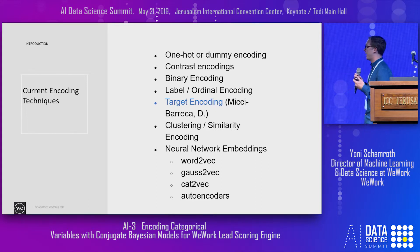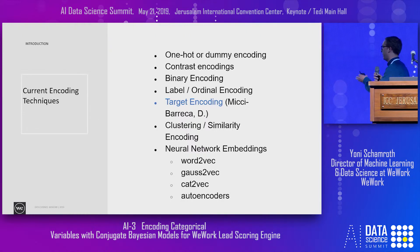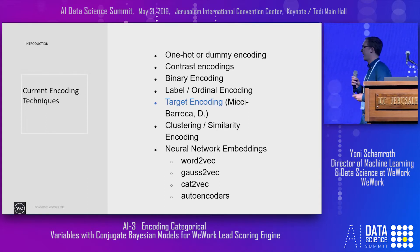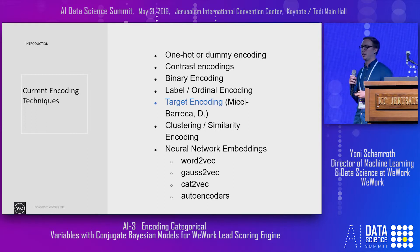With similarity encoding you can adequately apply dimensionality reduction techniques like principal component analysis. Neural network embeddings are also very popular — I'm personally a big fan of clever uses of word2vec, and I've seen product-to-vec, cat-to-vec, and all sorts of things. However, in industry, if you're trying to rapidly prototype and ship models, the R&D cost can be a little prohibitive.